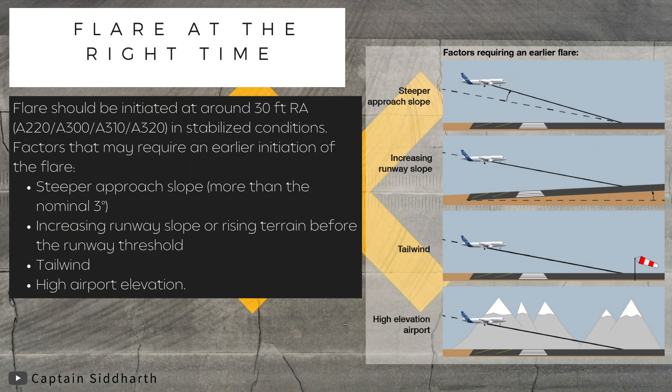Flare at the right time. Flare should be initiated at around 30 feet RA in stabilized conditions. Factors that may require an earlier initiation of the flare include: a steeper approach slope, increasing runway slope or rising terrain before the runway threshold, tailwind, and high airport elevation.